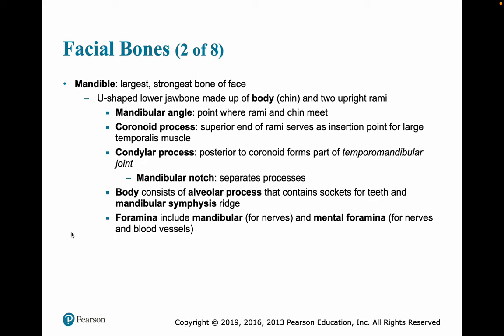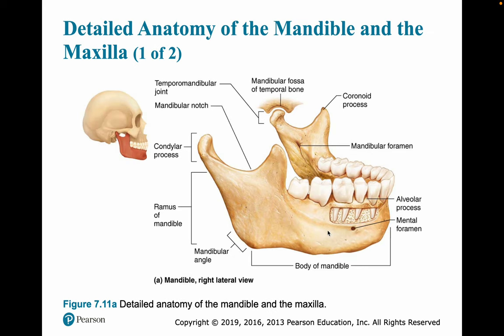The mandible is the largest, strongest bone of the face. It's U-shaped — the lower jawbone — made up of the body, which we think of as the chin, and two upright rami. The mandibular angle is the point where the rami and the chin meet. The coronoid process is on the superior end of the rami and serves as an insertion point for the temporalis muscle. The condylar process is posterior to the coronoid and forms part of the temporomandibular joint, and the space between those two processes is known as the mandibular notch. The body consists of alveolar processes that contain sockets for our teeth, the mandibular symphysis ridge, the mandibular foramina for nerves, and the mental foramina for nerves and blood vessels.